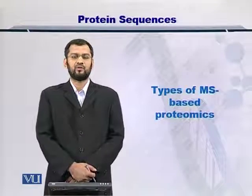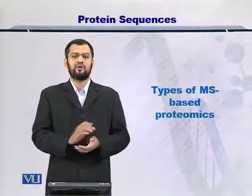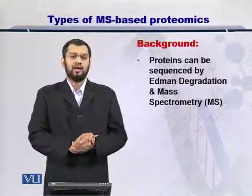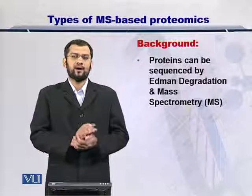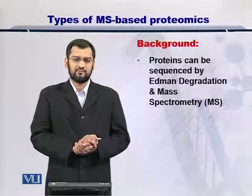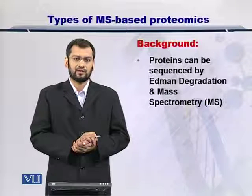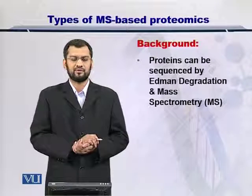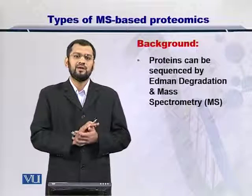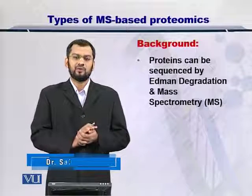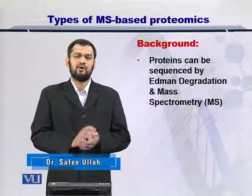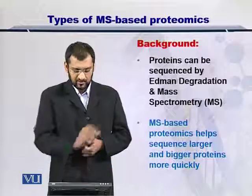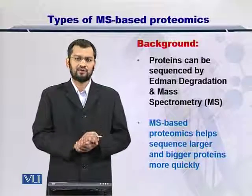In this module we are going to look at the types of mass spectrometry based proteomics. Proteins can simply be sequenced by using Edman degradation. You may not know the protein that is there in a sample and therefore you can proceed with the Edman degradation and arrive at the sequence. But Edman degradation has a shortcoming: it cannot sequence very large proteins, and therefore you can use mass spectrometry based proteomics, which can solve this problem for very large proteins as well.